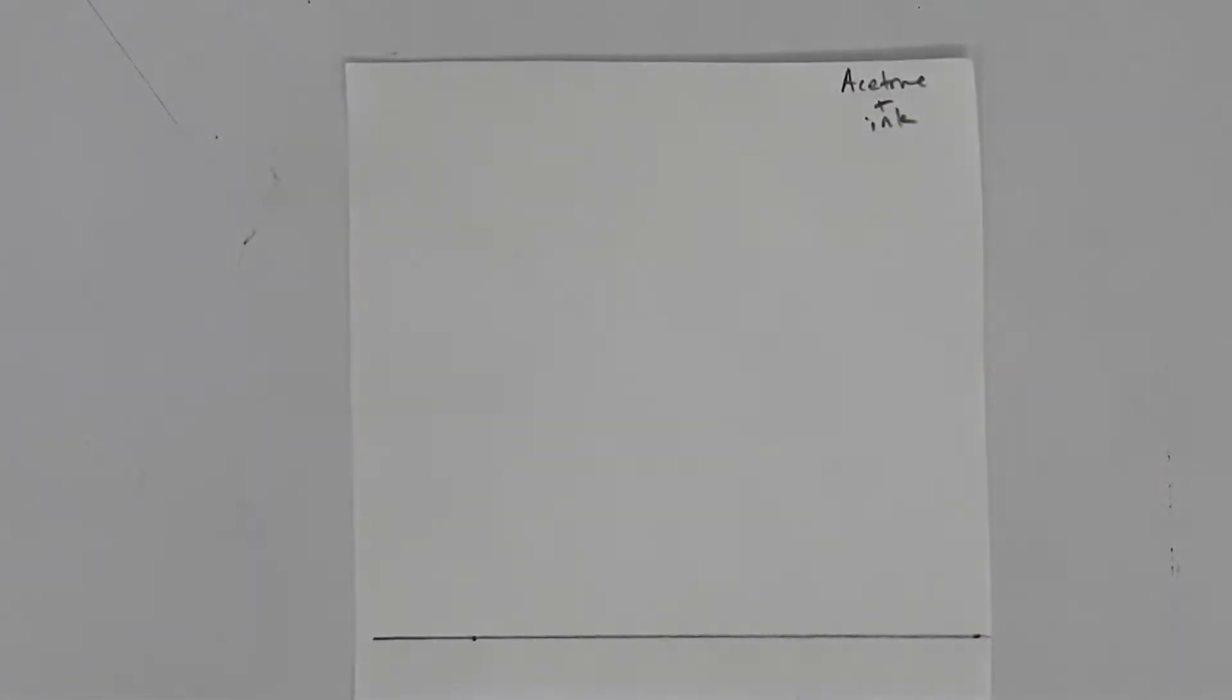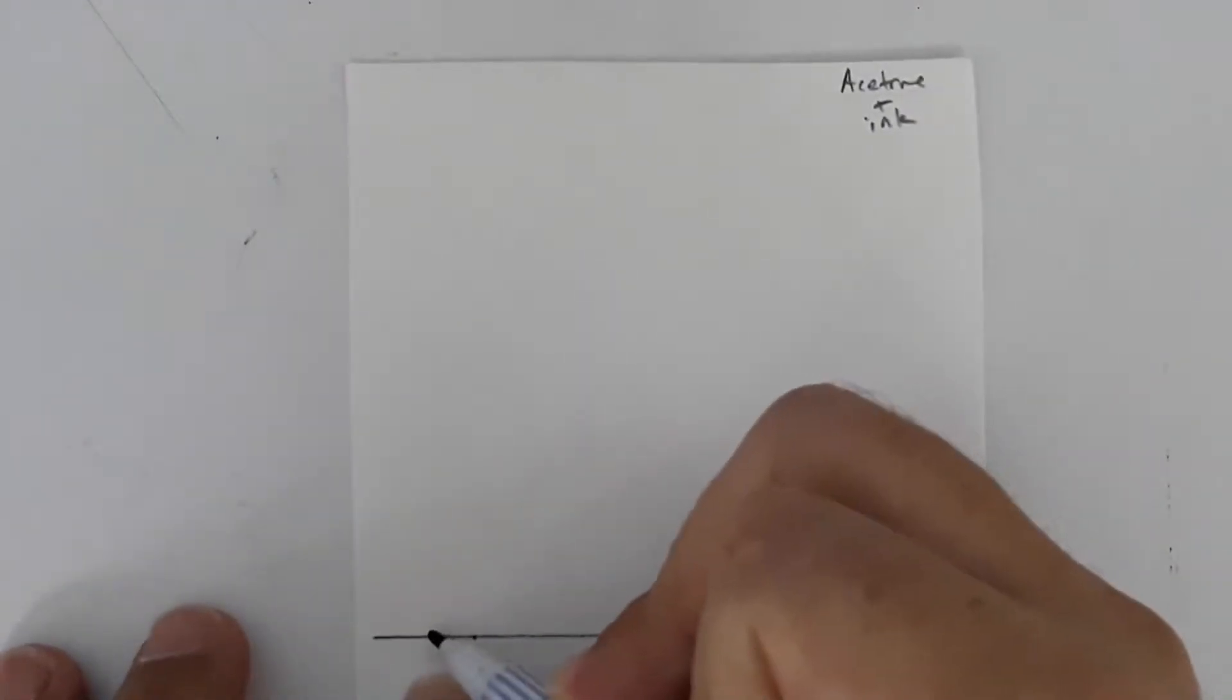We're going to be using several different colors of marker here. So I'm going to go ahead and spot the pigments onto the line. So here is black.